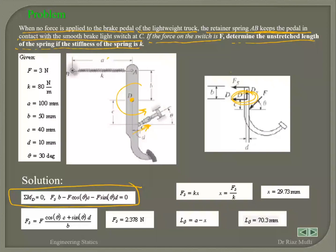A student asks: at the contact point of the brake with the switch, shouldn't there also be a reaction force preventing the brake pedal from breaking the switch? The answer is: F is the reaction force. When you draw the free body diagram of the pedal, you don't draw other components — there's no spring drawn, just a spring force; there's no switch drawn, just the reaction of the switch force on the pedal.